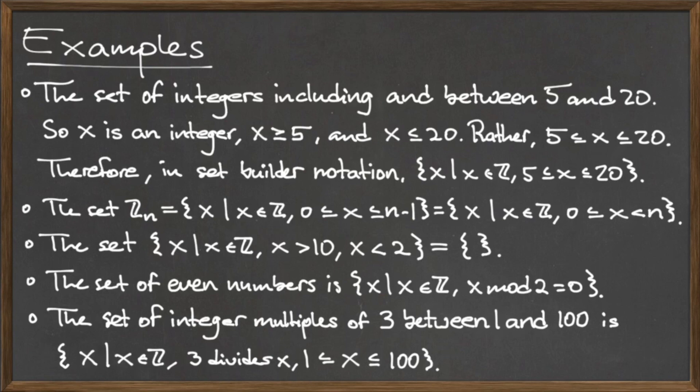Recall from a previous video that the set Zn, or Z mod n, are all of the integers starting at 0, all the way up to n minus 1, where n is a natural number that is provided.